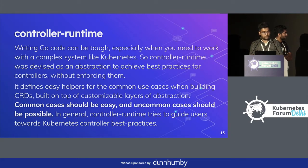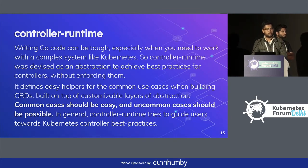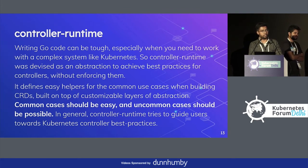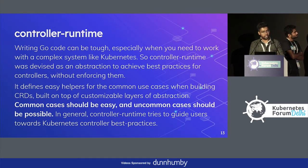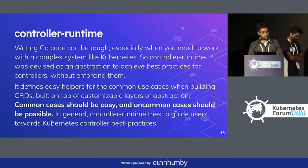Controller Runtime defines easy helpers for common use cases for building CRDs built on top of Kubernetes API abstractions. The goal is that common use cases should be easy to implement, yet there must be flexibility for uncommon use cases. It is biased towards best practices that people should know about writing a controller. When implementing a shared informer through code, it can be very challenging — controllers can be huge with more than 400 lines, thousands of lines of code, and most of it is boilerplate. Controller Runtime gives you a set of clients you can consume and use to write your own business logic. It is one of the more popular approaches to how modern third-party controllers should be written.